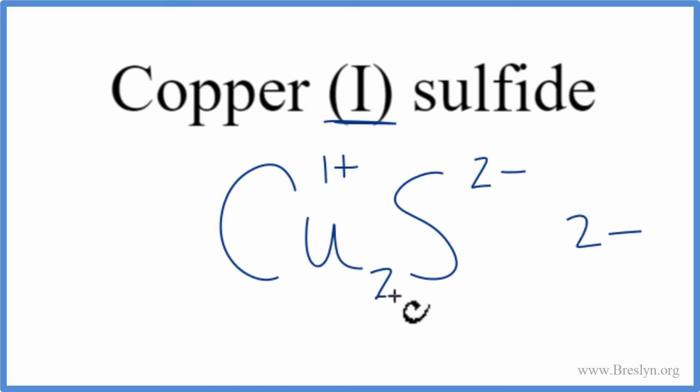2 of the Cu's, 2 times the 1 plus, that's 2 plus. So those add up to zero, give us a net charge of zero, and this is the correct formula for copper 1 sulfide.